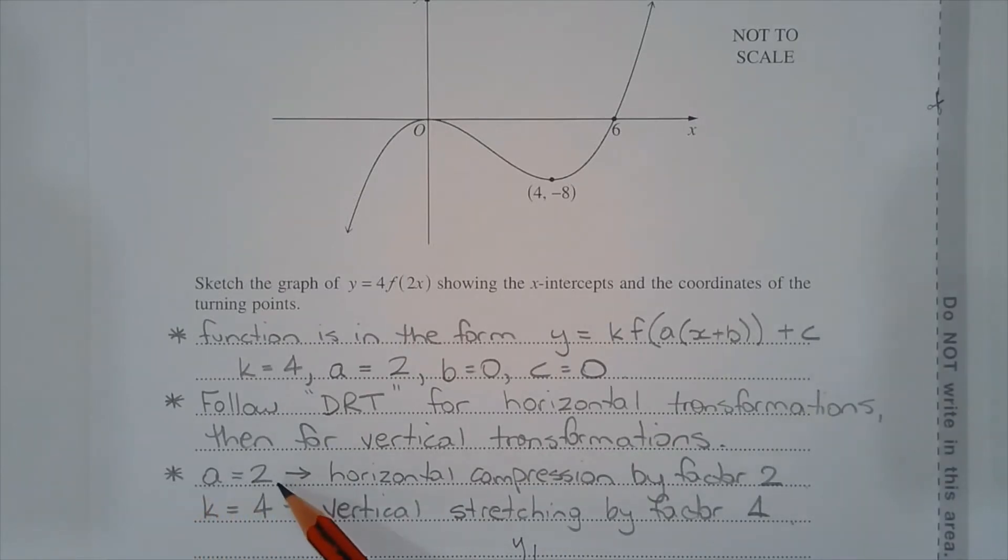Now, a equals 2 implies that there's a horizontal compression by factor 2. And k equals 4 means there's a vertical stretching by factor 4.